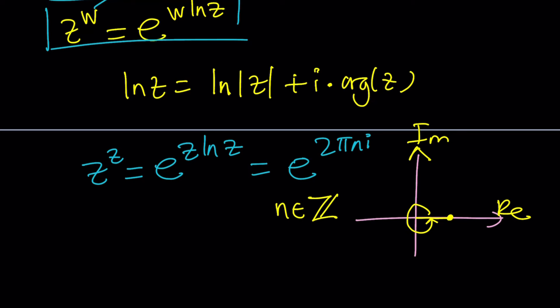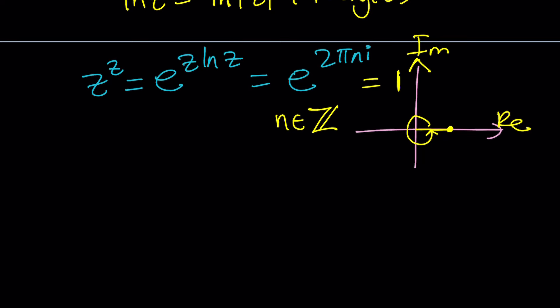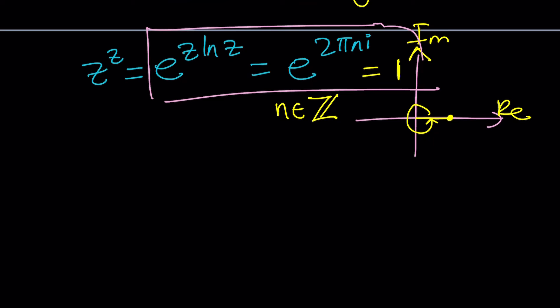So e to the power two pi n i represents one but there are infinitely many solutions because you get a different value for each value of n. So let's see how we can figure this out. We got a nice equality, let's ln both sides or just think about the exponents: z ln z equals two pi n i, where n is an integer and i is the imaginary unit whose square equals negative one.